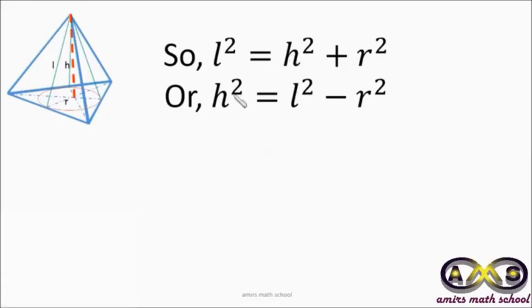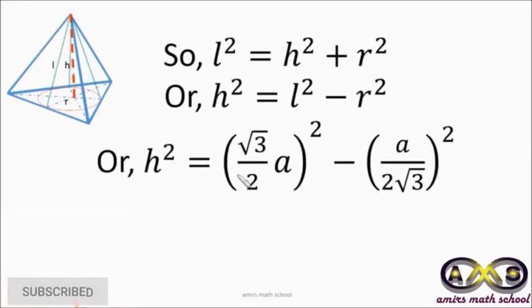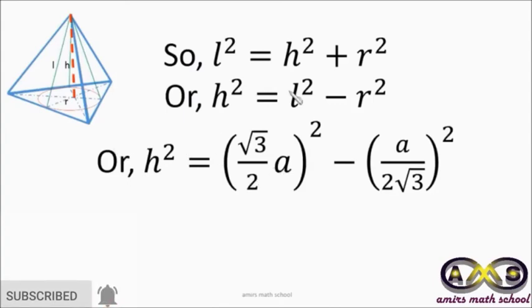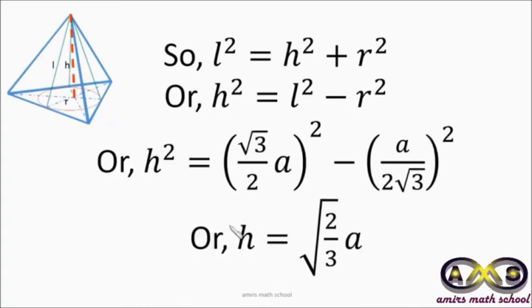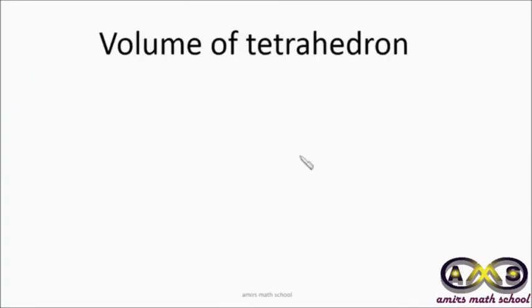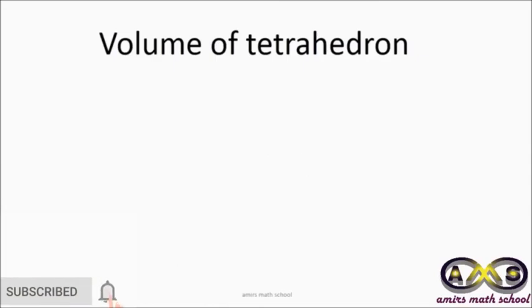Substituting l = (√3/2) · a and r = a/(2√3) into h² = l² − r², we can find the height. After calculation, we get the height h = √(2/3) · a.